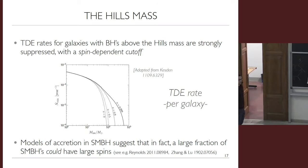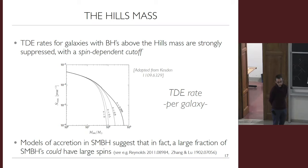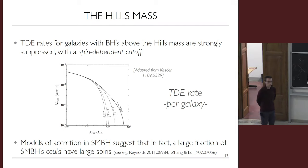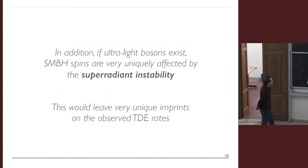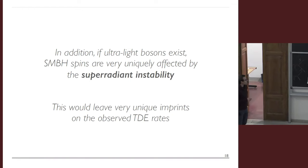The spins of supermassive black holes are not well measured, but from theory we expect them to have sizable spin because they grow by accretion. Supermassive black holes are believed to be born with large spins in several theoretical models. Now let's provide the connection with BSM physics: if ultralight bosons exist in nature, they affect the spins of supermassive black holes very effectively via the super-radiant instability, leaving unique imprints in TDE rates.